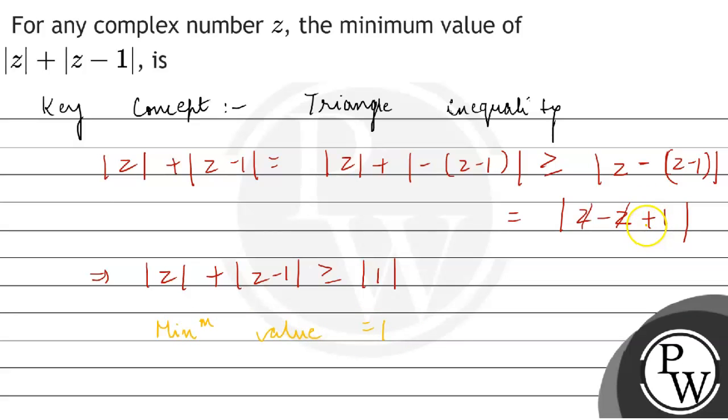With z cancel out with z we are left with mod of 1. So the minimum value is 1. So we have asked minimum value. This is the final answer.